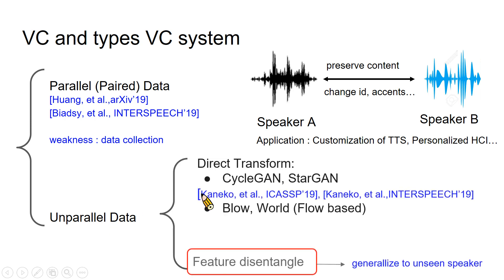There are two main methods in unparalleled data: direct transform and feature disentangle. GAN-based models like CycleGAN, StarGAN, flow-based models like Flow, and WaveNet belong to direct transform. In this talk, we will focus on feature disentanglement method.